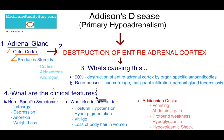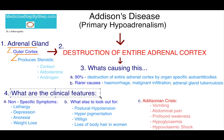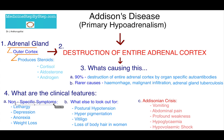So what are the clinical features? What are these patients going to present with? Unfortunately, Addison's disease is a difficult diagnosis to make early on, largely because of the nonspecific symptoms that they can present with, such as lethargy, depression, anorexia, and weight loss.